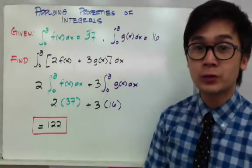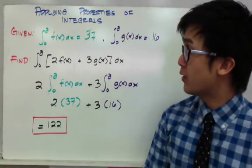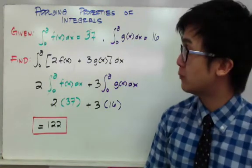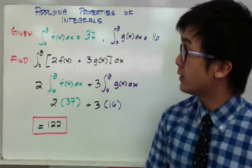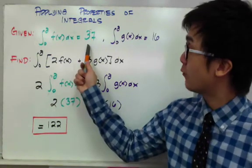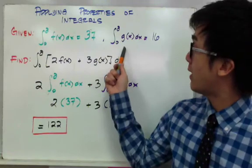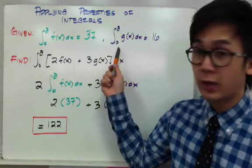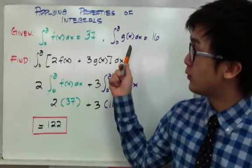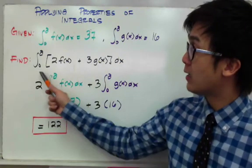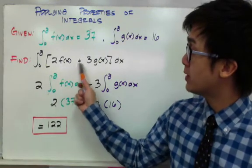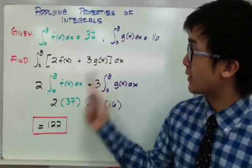In this given problem, we have two integral notations. The first one is the integral of f of x dx from 0 through a, which is equal to 37. The other integral notation is g of x dx from 0 through a, which is equal to 16. For this problem, we need to find and evaluate the integral from 0 through a of 2f(x) plus 3g(x) dx.